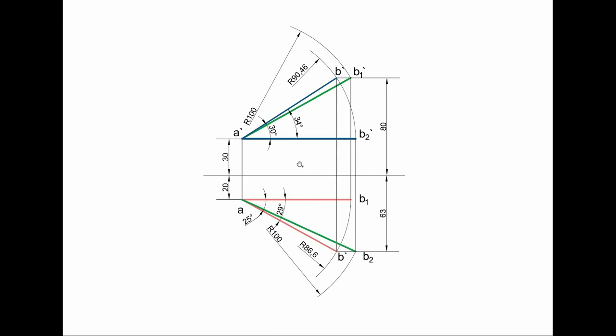The inclination with HP is 30 degrees and inclination with VP is 25 degrees — these are the true inclinations of the line itself. The front view inclination with XY is 34 degrees and top view inclination with XY is 29 degrees. When it is the true length, we say the line is inclined to the horizontal or vertical plane. When it is the view, we say the front view or top view is inclined to the XY line. In the next session, we will do some application problems.